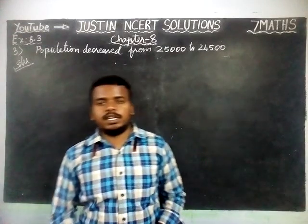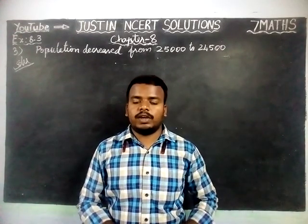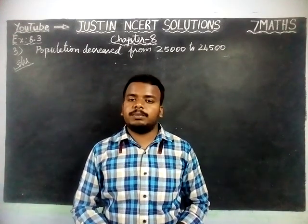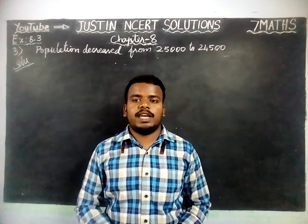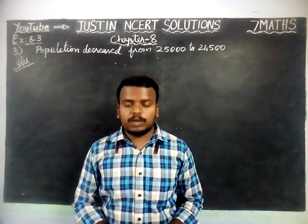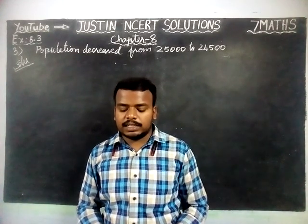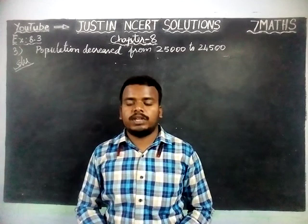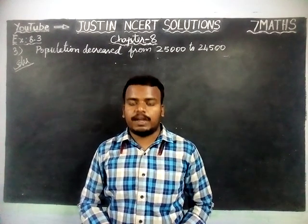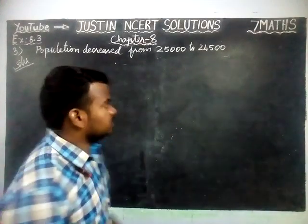Hi friends, welcome to Justine's NCIT Solutions. In this video, we are going to see Class 7 Maths Chapter 8 Exercise 8.3 Third Question. The question is: The population of the city decreased from 25,000 to 24,500. Find the percentage decrease.